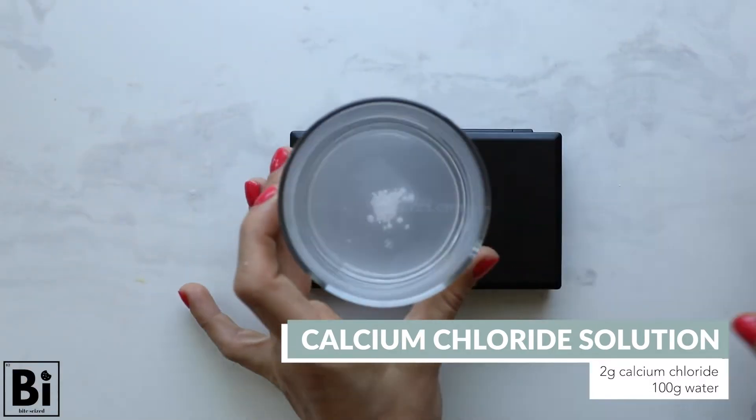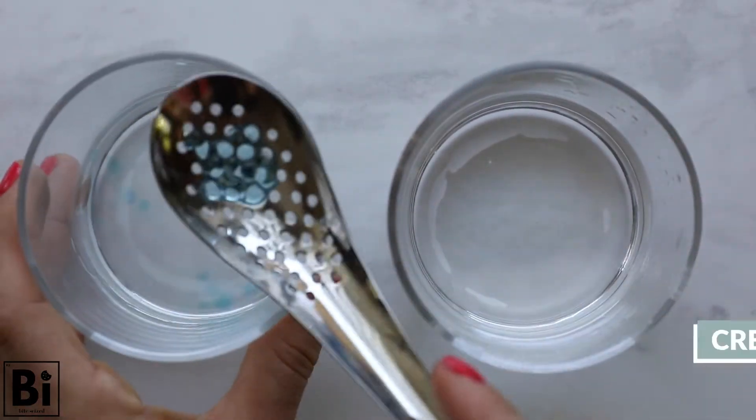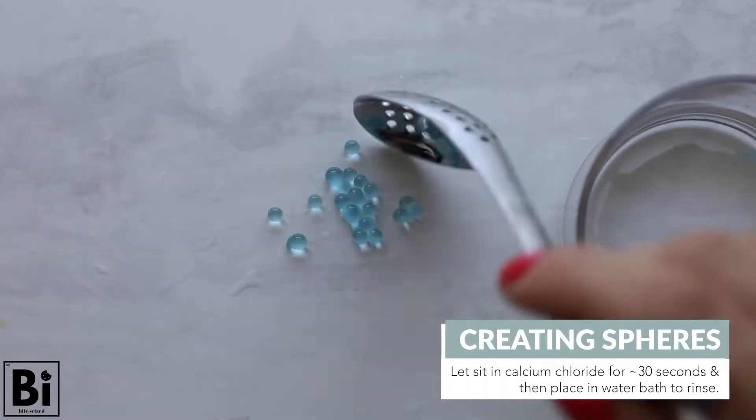Then take a dropper of the sodium alginate solution and drop it into the calcium chloride solution. After 15 seconds, remove the droplets and put them in water to give them a rinse. And that's it. That's just the most basic way to do this.